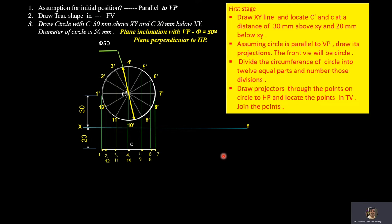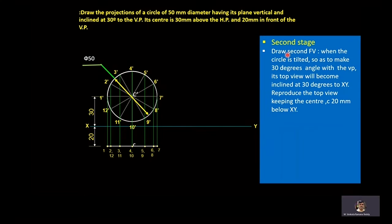Then we move towards the second stage. C-dash is at a distance 30 mm and C is at a distance 20 mm. In the second stage, the plane is inclined at 30 degrees to the VP, with its center 30 mm above HP and 20 mm in front of VP. We have to satisfy this condition. We are drawing the second front view, so we tilt the circle such that it makes an angle of 30 degrees to the vertical plane, keeping center C in the top view at a distance 20 mm from the XY line.